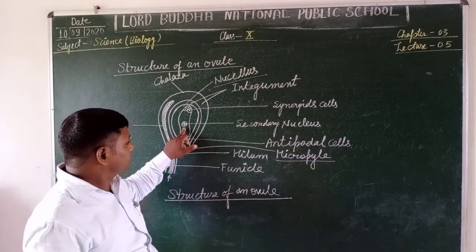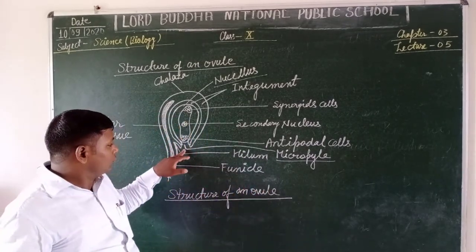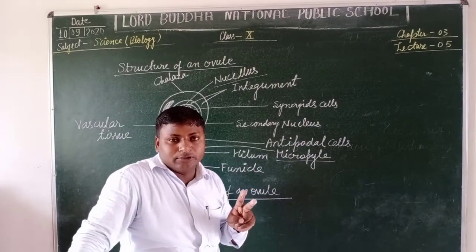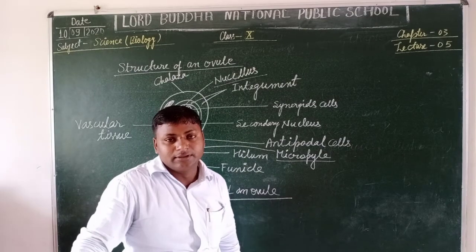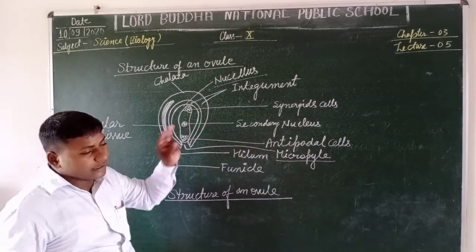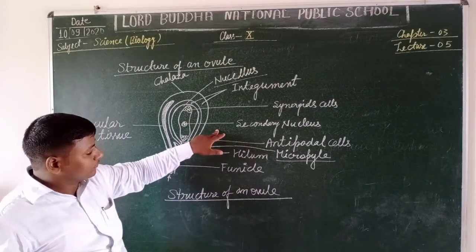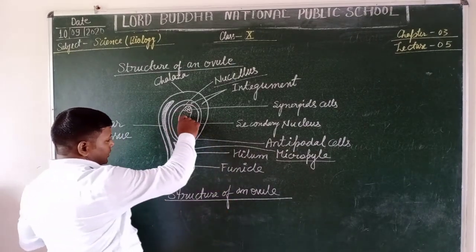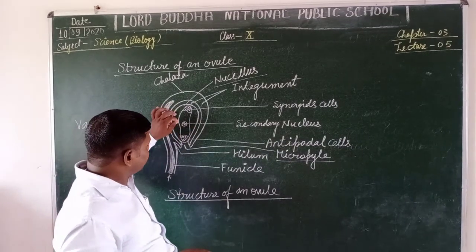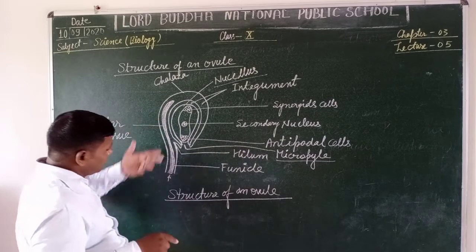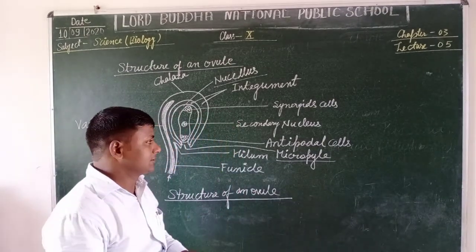During that time, another male gamete secreted by the pollen tube — meaning from the pollen tube at one time two male gametes are secreted — the second male gamete fertilizes the secondary nucleus. Thus the nucleus contains three haploid sets of chromosomes; this is called triple fusion. The triple fusion and the fusion of the egg cell with the male gamete take place simultaneously, one after another, and such type of fertilization is known as double fertilization.